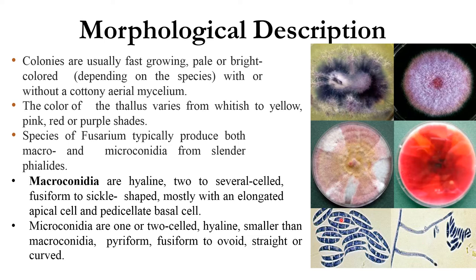Macroconidia are hyaline, two to several celled, fusiform to sickle-shaped. You can see them in a sickle shape, mostly with elongated apical cells and pedicellate basal cells. Microconidia are one or two celled, hyaline, smaller than macroconidia, pyriform, fusiform to ovoid, straight and curved. Chlamydospores may be present or absent.